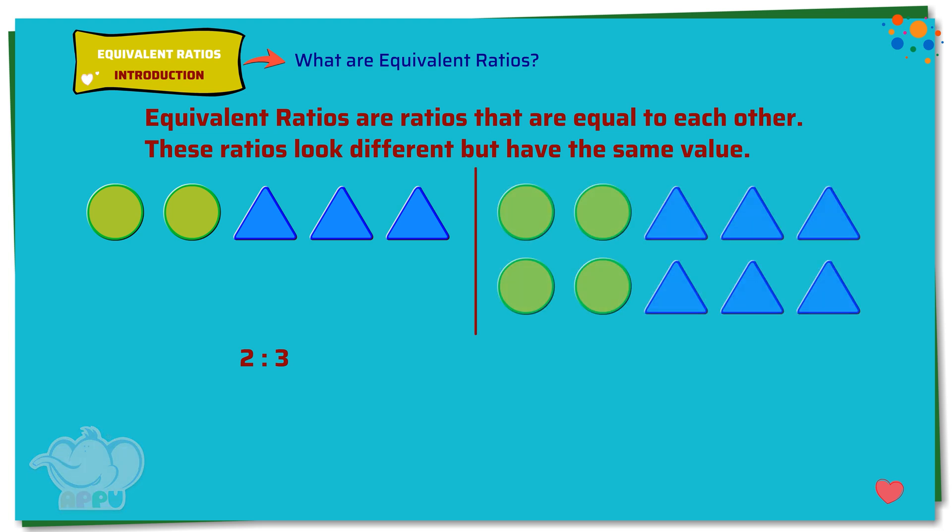Now we see there are four circles and six triangles. The ratio of circles to triangles is 4 is to 6. We simplify this because 2 is a common factor.